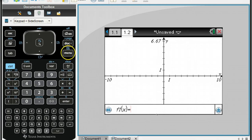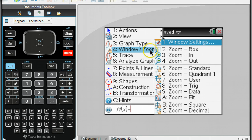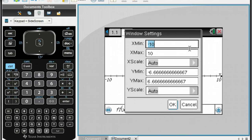So if you go over to your menu button, and under menu you see the 4th option is Windows Zoom. And we want to go up to the first option under Windows Zoom, which would be Window Settings. So you should get to a screen like this.